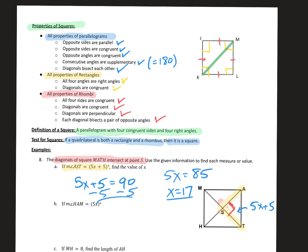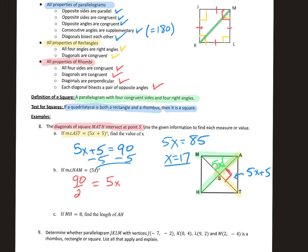For the next part, the measure of angle HAM is 5x. The diagonal bisects the right angle of 90 degrees, so 5x equals 90 divided by 2, which is 45. Dividing by 5, x equals 9.